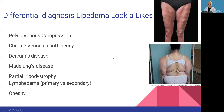There are also a lot of things that can look like lipedema but aren't lipedema. Those are pelvic venous compression, chronic venous insufficiency, Dercum's disease, Madelung's disease, partial lipodystrophy, and obesity.